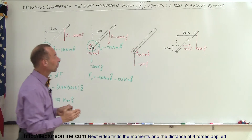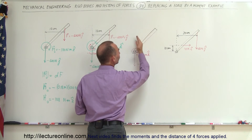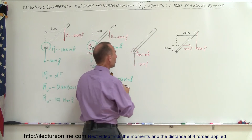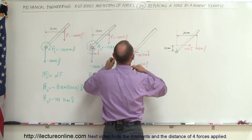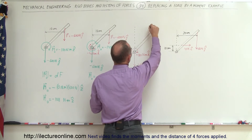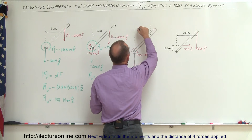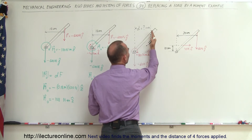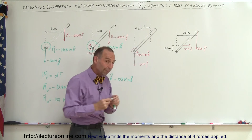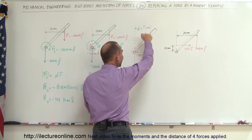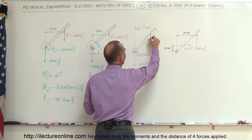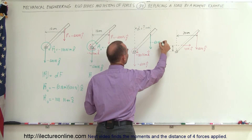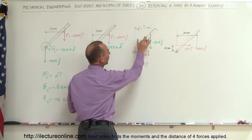Next, we're going to move this force to some location such that the moment disappears. We need to move the force a certain distance — we're not sure yet what that distance is, that's what we're trying to find. We move this force to some other point, and the magnitude of the force must remain 600 newtons in the negative direction so that the forces in the y direction remain the same.